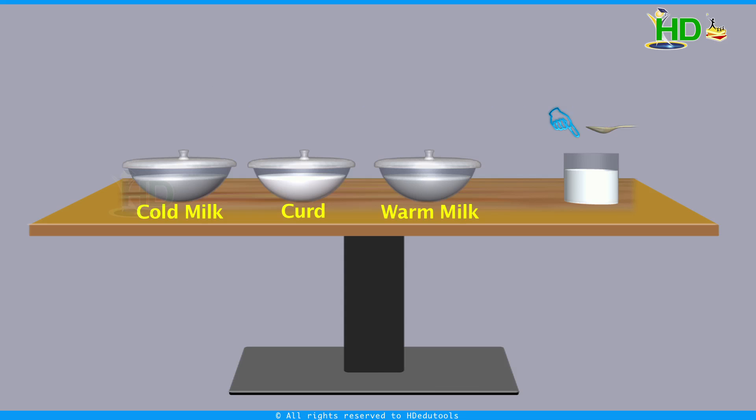From this experiment, we can observe that when curd is added to warm milk, then only milk can be converted into curd. If curd is added to cold milk — no change. And if no curd is added to the milk at all, then also there is no change.